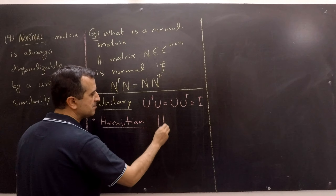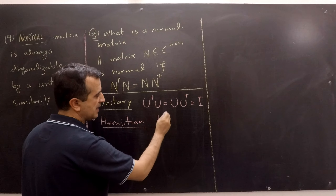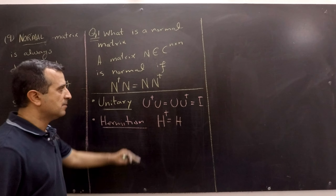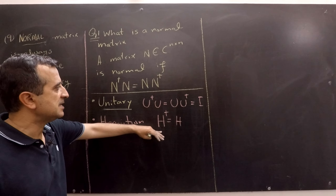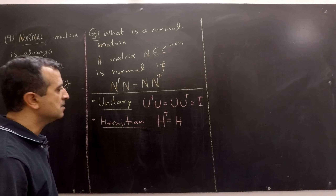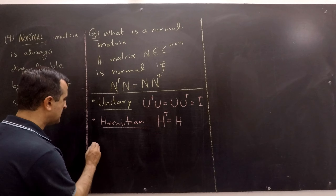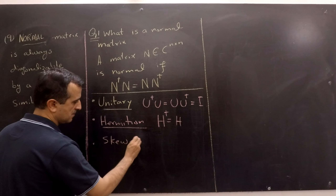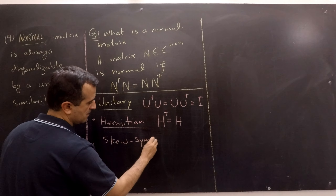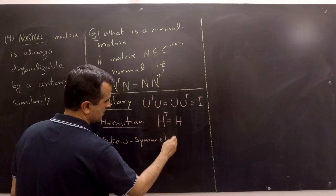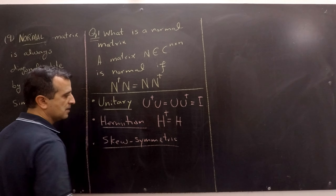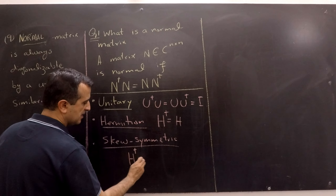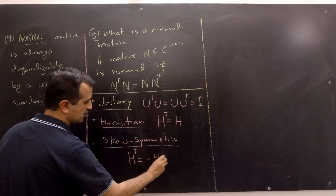The Hermitian matrix definition states that H conjugate transpose equals H. By this definition, it is easy to see that Hermitian matrices are indeed normal matrices. Similarly, skew-symmetric matrices are also normal matrices, where H conjugate transpose equals minus H.